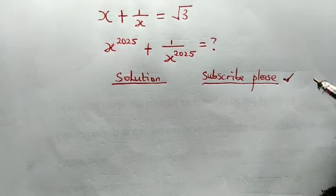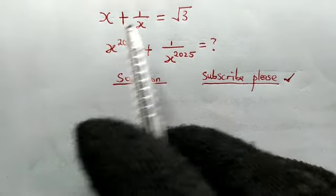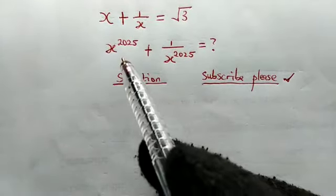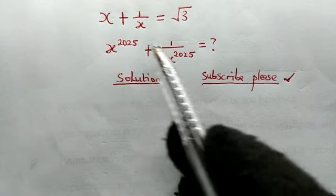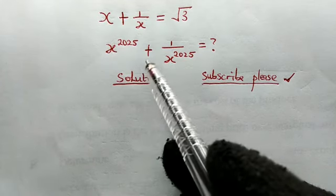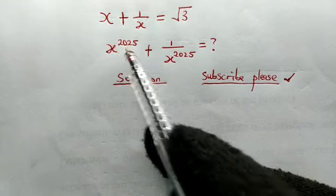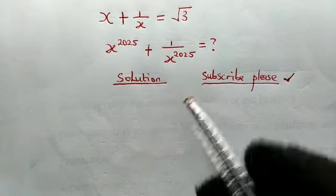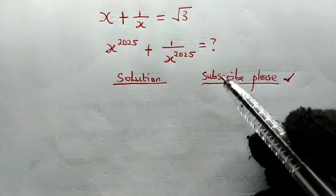Today we have this interesting Olympiad math problem. We're given that x plus 1 over x is equal to √3, and we are asked to evaluate this expression: x to the power of 2025 plus 1 over x to the power of 2025.